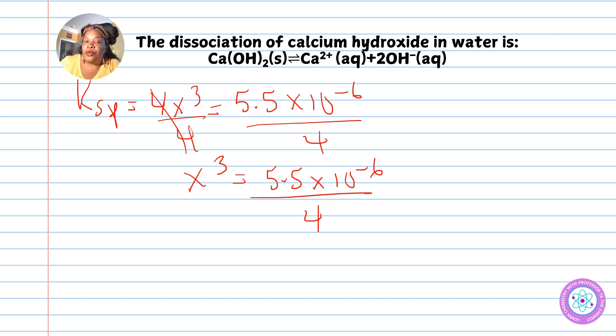Now we take the cube root of this number. The cube root of (5.5×10⁻⁶ / 4) equals x. Let's go ahead and plug this into our calculator.